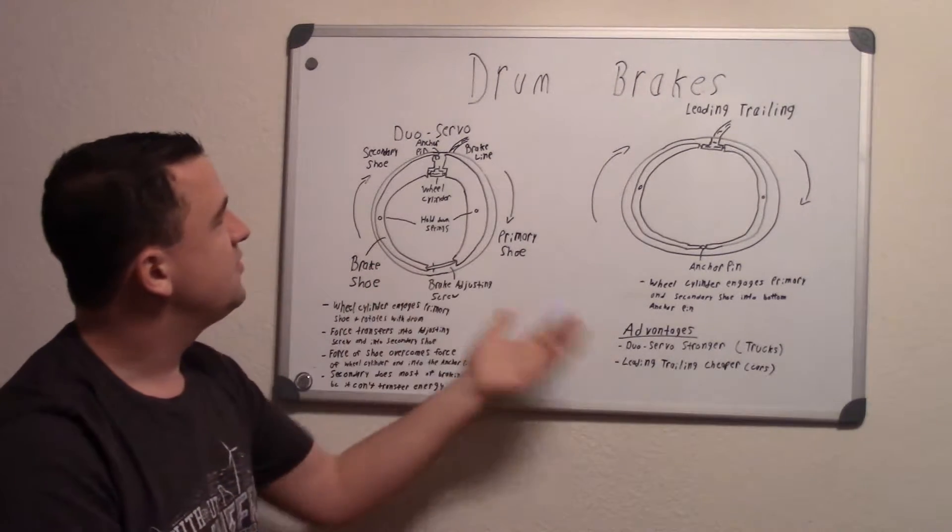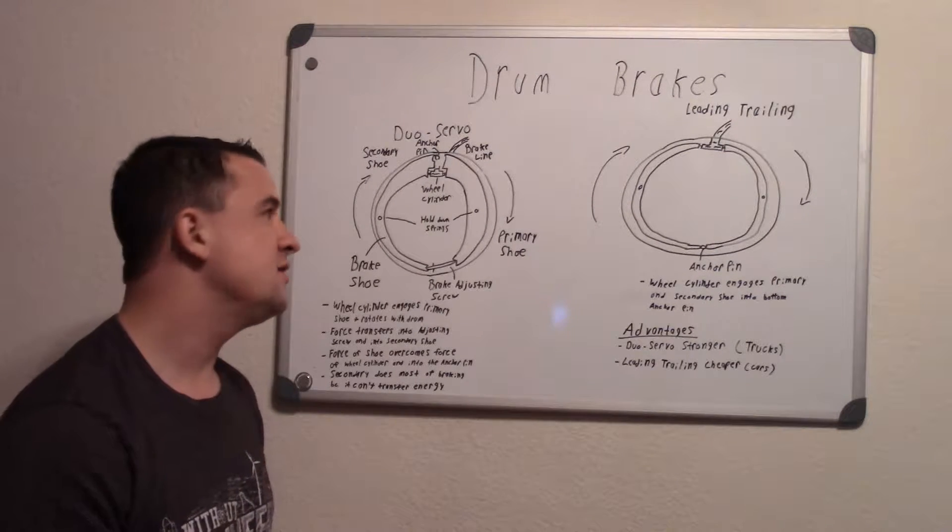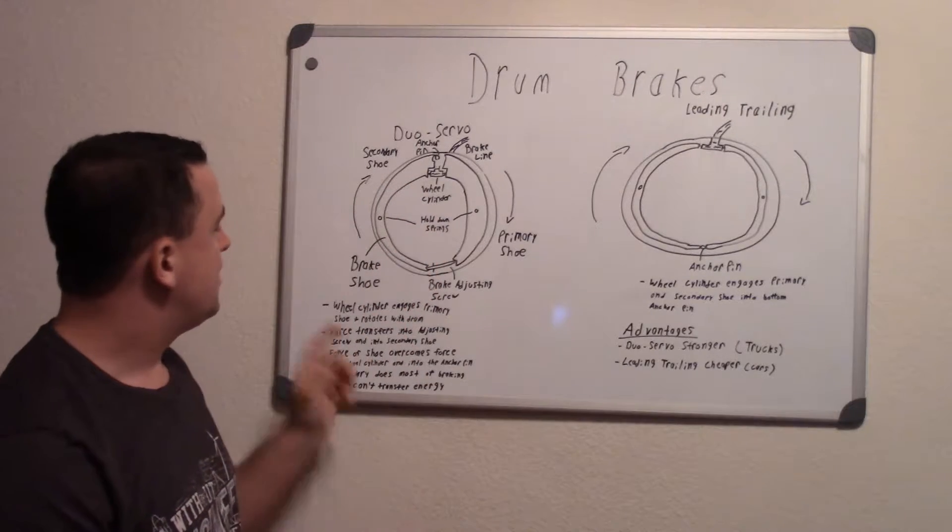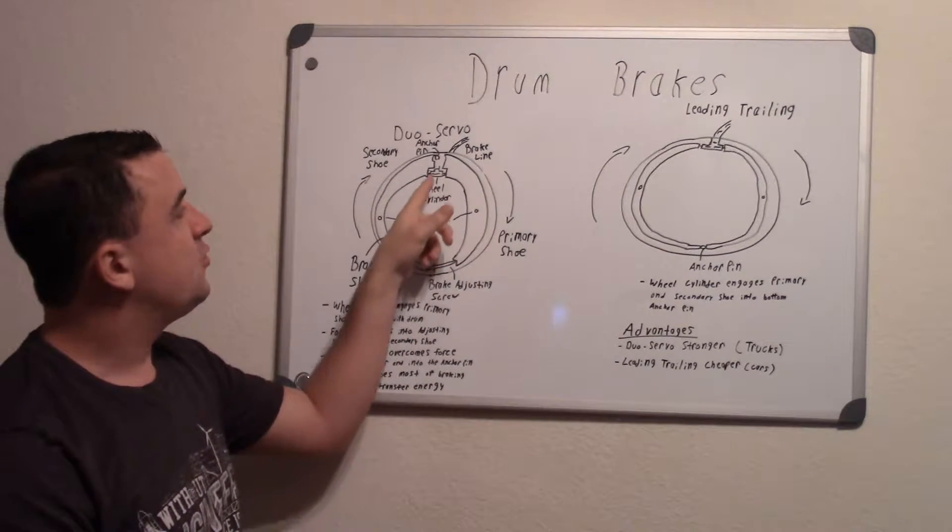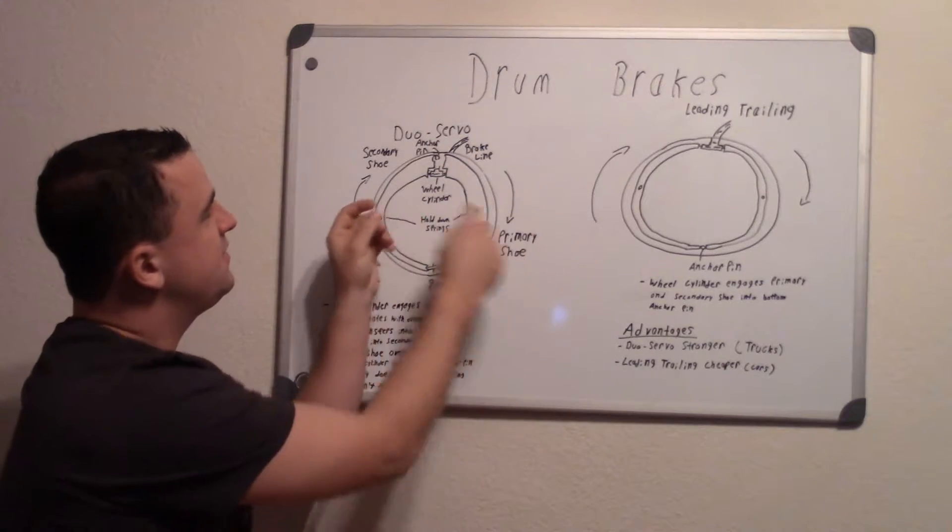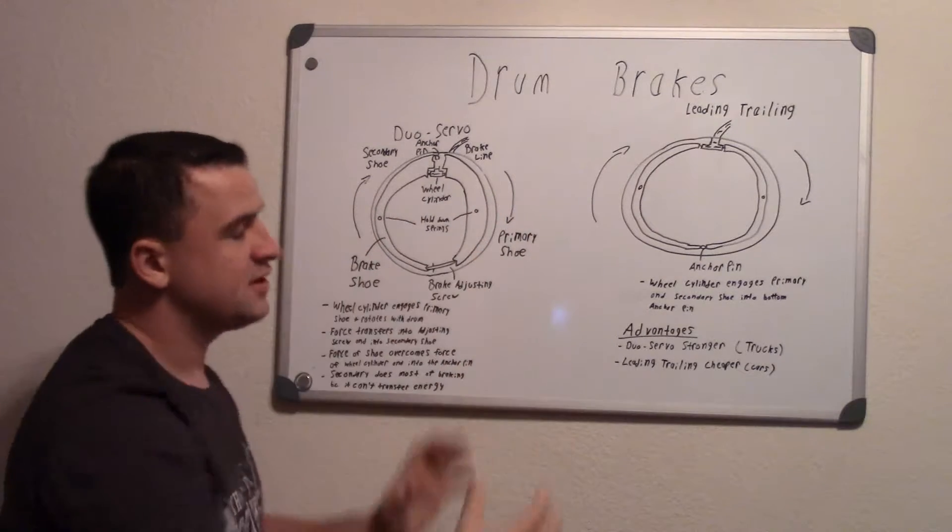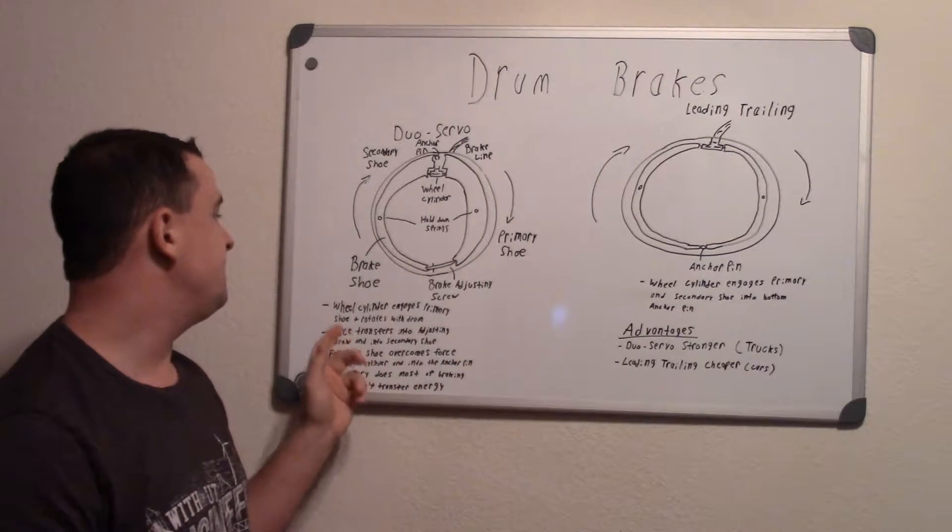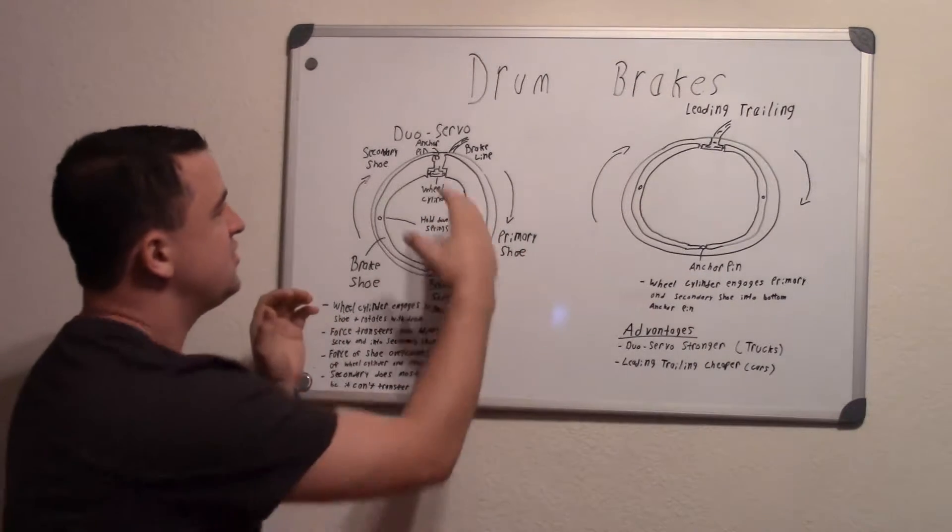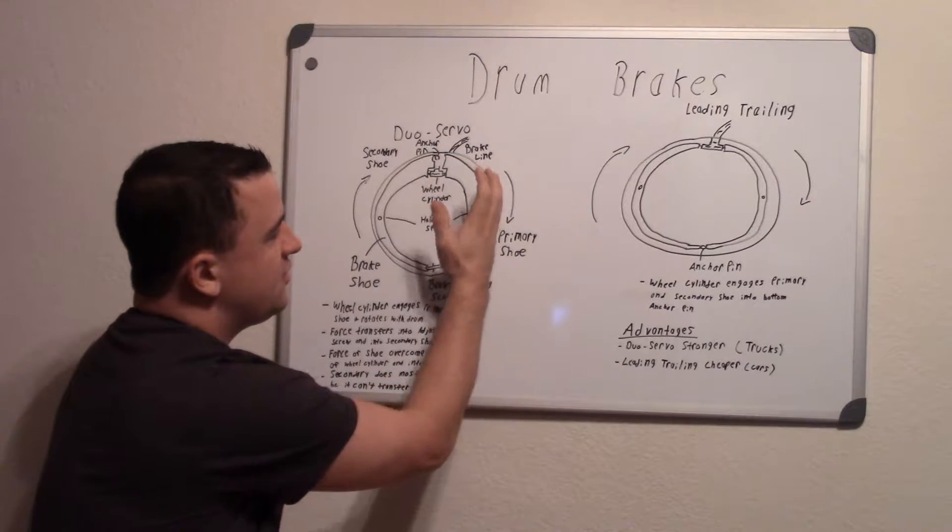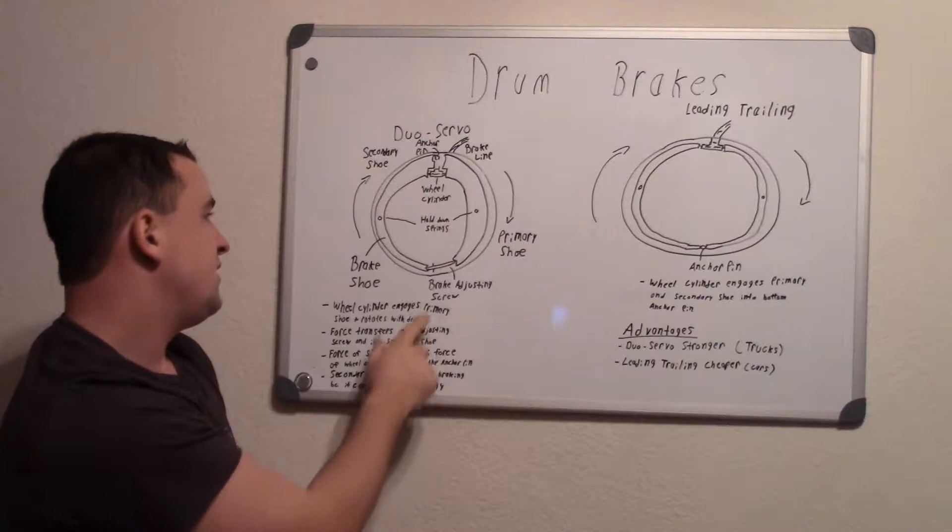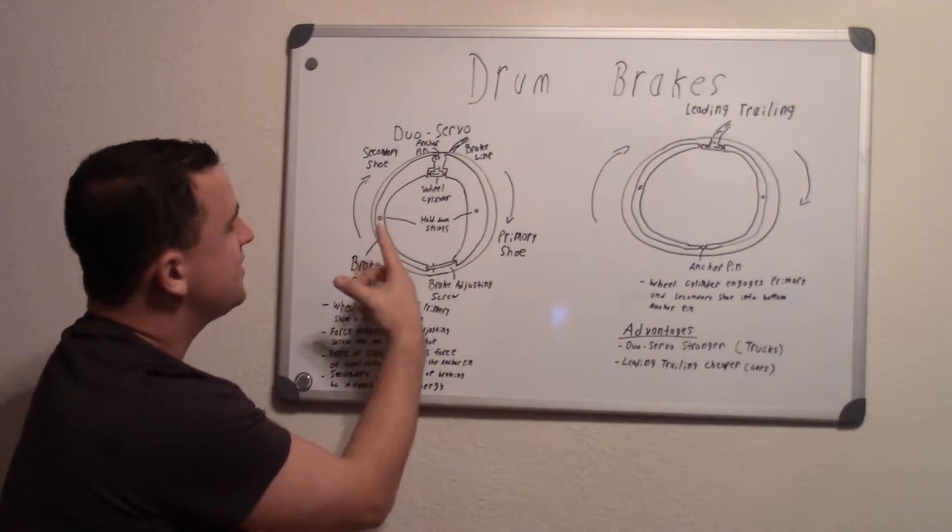Now what's the difference between duo servo and leading trailing is basically in a duo servo, right here actually first you have the wheel cylinder. That's where the fluid comes in from the brake line and these little pins on it spread out and engage those brake shoes. What's the difference is first the wheel cylinder engages the front shoe known as a primary shoe and that shoe starts to rotate with the drum. And then that force is transferred into the adjusting screw here and then into the secondary shoe.